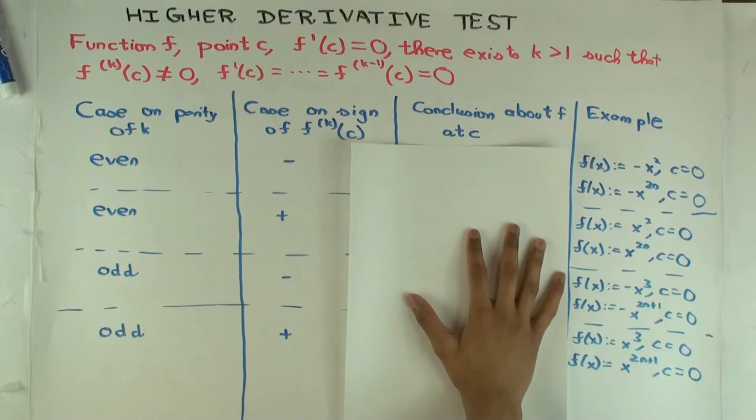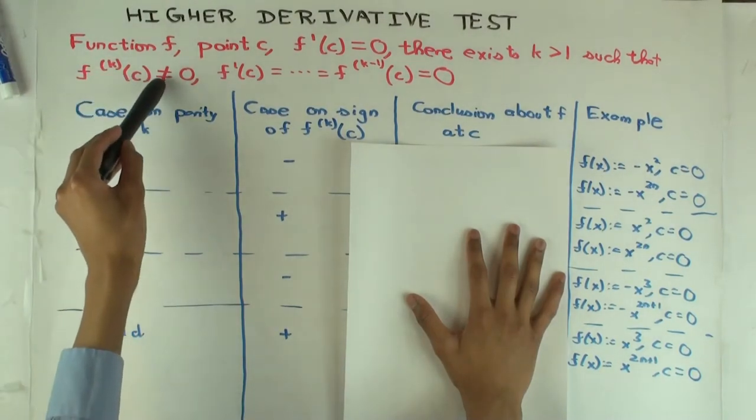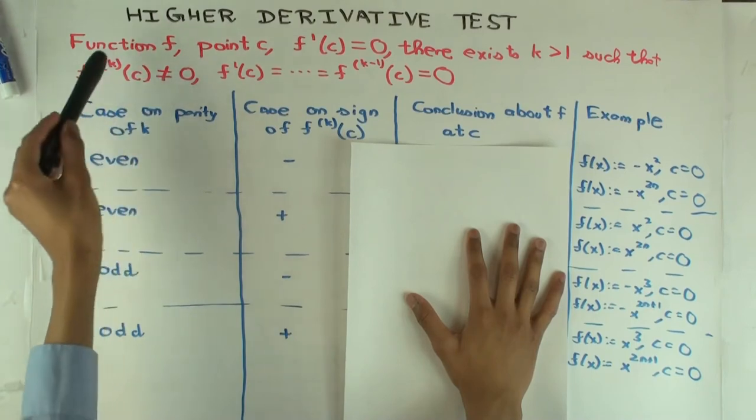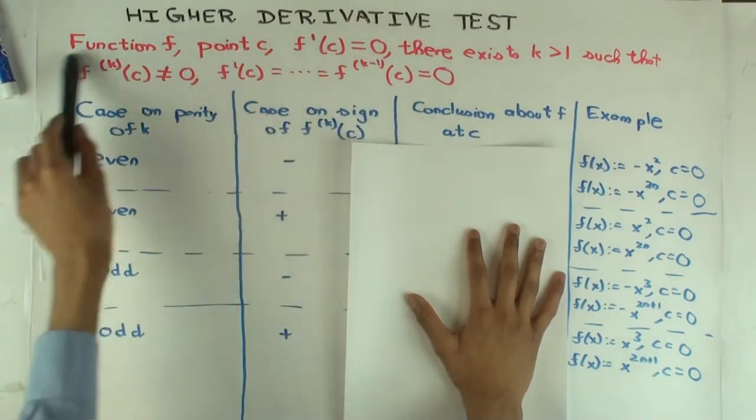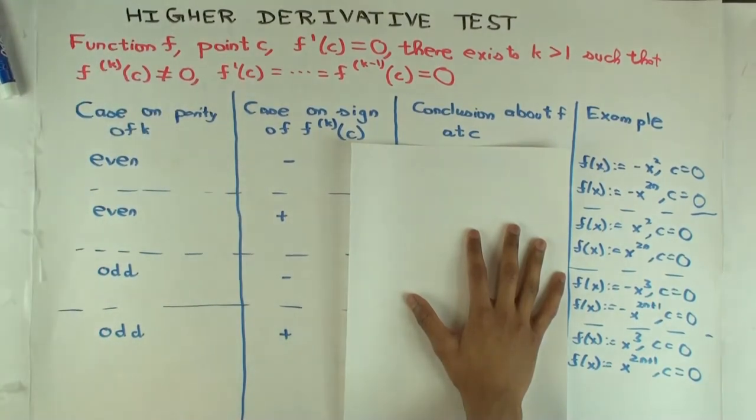So in fact, in this case, this test is always conclusive if you find this case where f to the k at c is non-zero. It could be inconclusive, but that would happen if you don't get in this situation. So if you have this, then all the cases are conclusive.